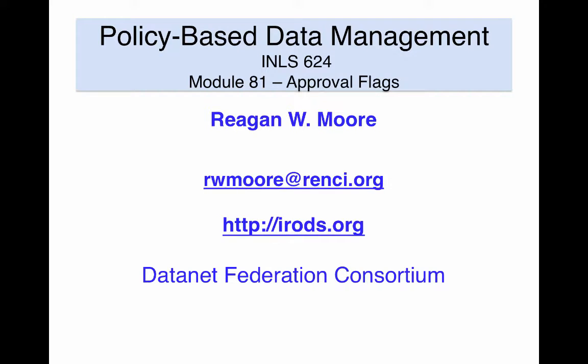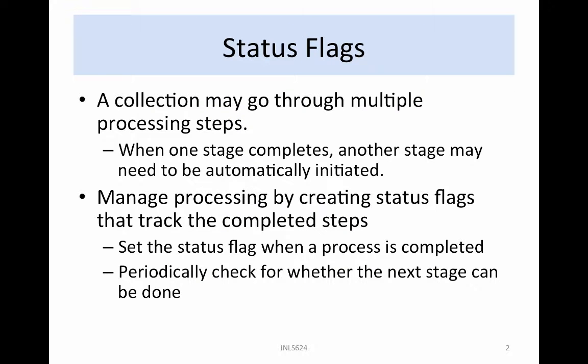Status flags are used to track processing stages. Approval flags track the receipt of usage agreements or the permission to publish files. A collection may go through multiple processing steps. When one stage completes, another stage may need to be automatically initiated. The multiple processing steps can be managed by creating status flags that track the completion of stages.